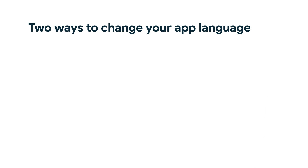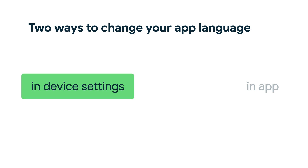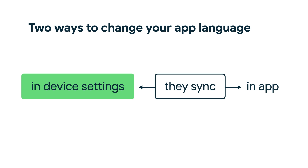As a developer, you can provide this functionality to your users in two ways: first, in device settings; second, in app. You might choose to do one of these things or both of these things. And if you do both, these two things sync. No matter where your users are setting your application language, whether that be in the settings app or in your application, your app will display in the correct language.